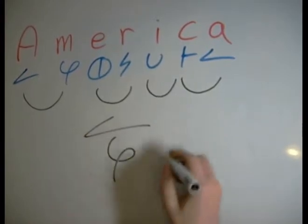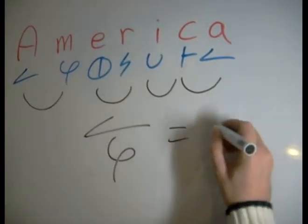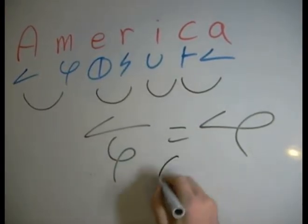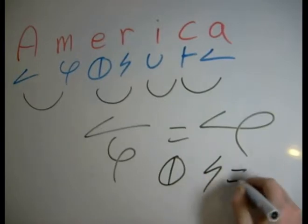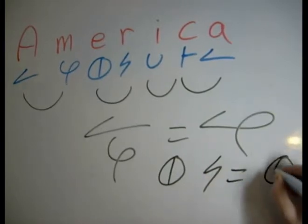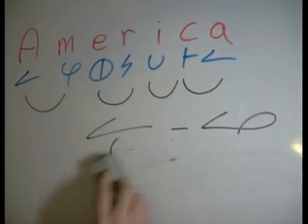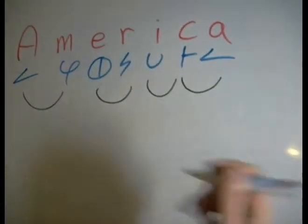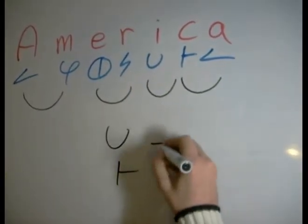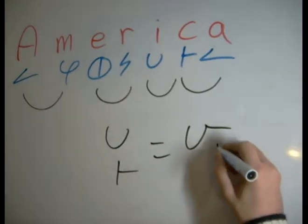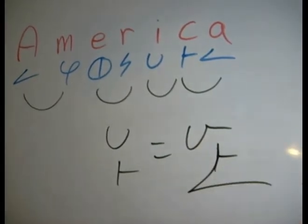A plus M equals AM — we can reduce the stroke out of there. The next thing we can do is E plus R equals ER — put the R directly inside of the E. And then I plus C can become IC. And then C, A could also become CA.